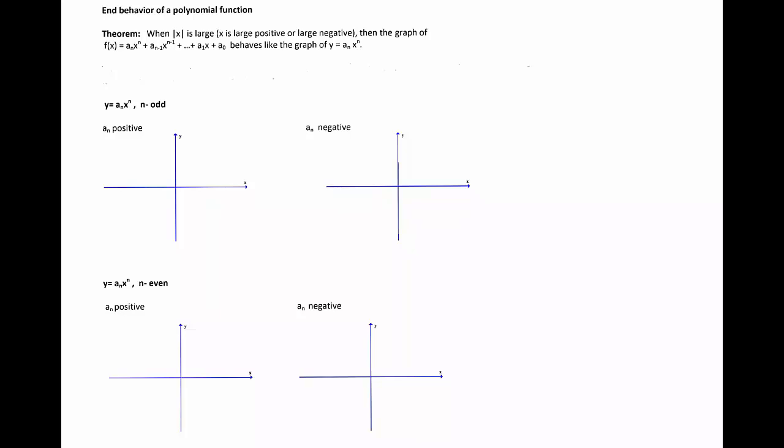The behavior of a function for x with large absolute value is called the end behavior of the function, since it describes the behavior of the graph when values of x decrease without bound, which means the values of x are large negative numbers, or increase without bound on the right end where values of x are large.